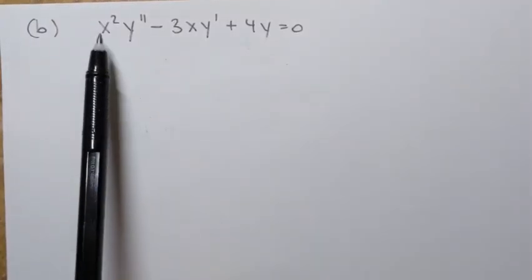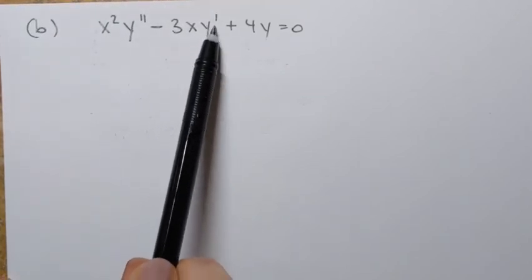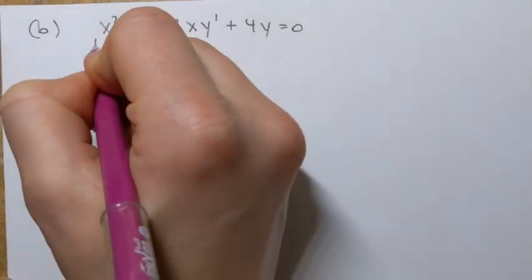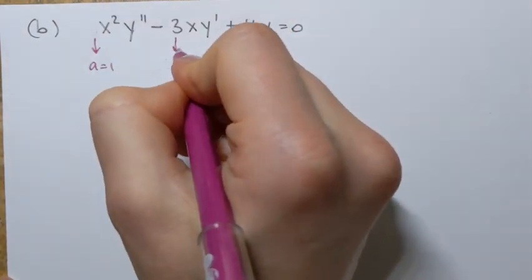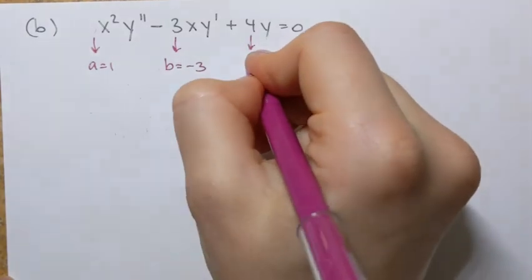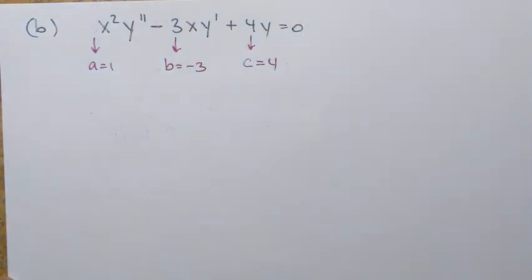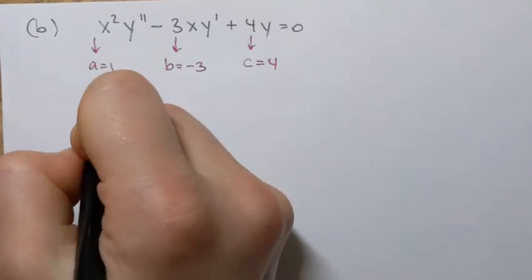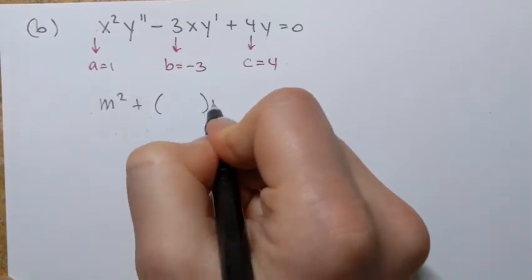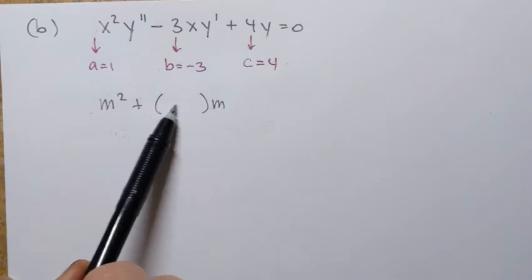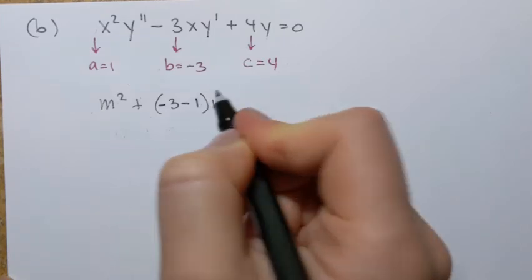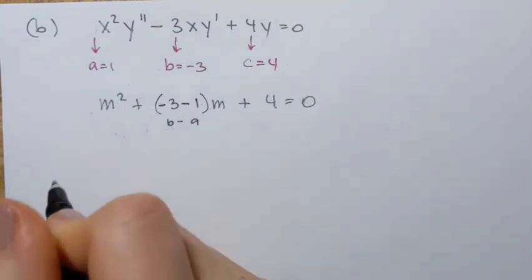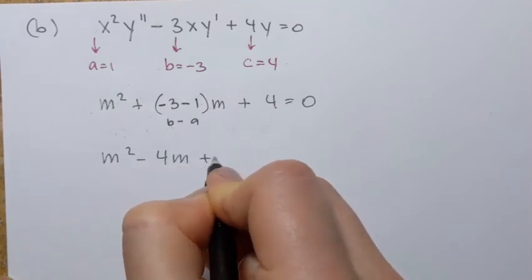Now let's solve the following equation: x squared y double prime minus 3xy prime plus 4y equals 0. We start by determining the constants: a equals 1, b equals negative 3, and c equals 4. Setting up the characteristic equation: am squared plus (b minus a)m plus c equals 0 gives m squared plus (negative 3 minus 1)m plus 4 equals 0, which simplifies to m squared minus 4m plus 4 equals 0.